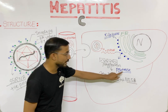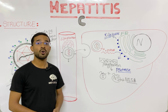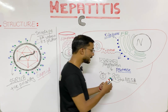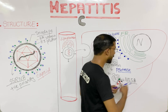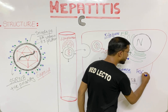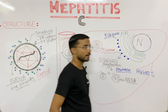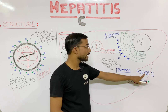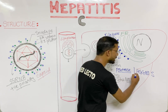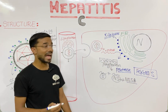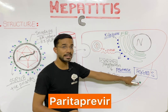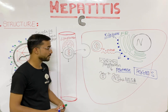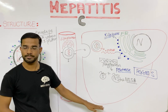An important point to remember is that many antiviral drugs inhibit the HCV protease. You can remember them by the mnemonic PGBTS: Paritaprevir, Grazoprevir, Glecaprevir, Telaprevir, Boceprevir, and Simeprevir — these are the different antiviral drugs that block the protease.